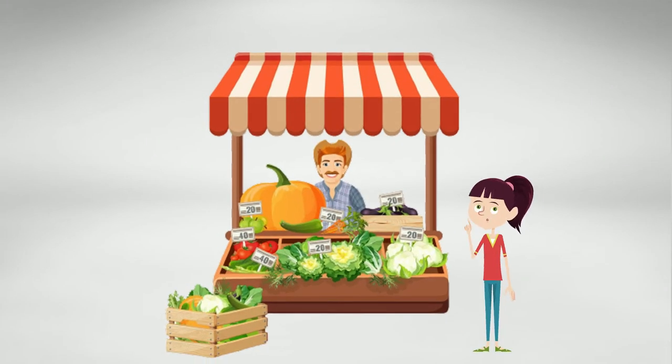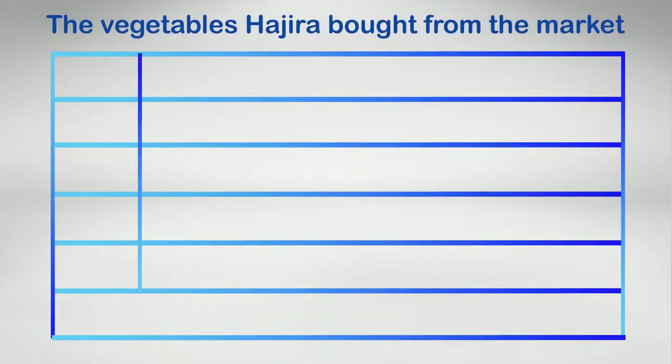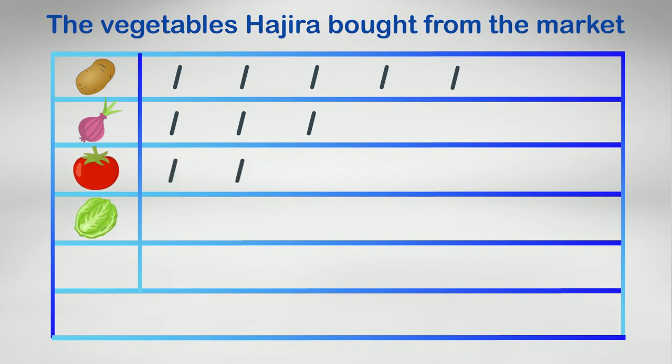Hajra buys different vegetables from the market. The picture graph shows the amount of each vegetable she bought. The vegetables Hajra bought from the market: potatoes, onions, tomatoes, cabbage, cucumber. Key: each slash is equal to one kg.